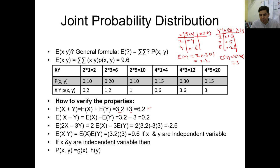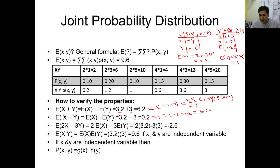When you add E(X) + E(Y) = 3.2 + 3 = 6.2, this equals E(X+Y) which is the double summation of (x+y)·P(x,y). Similarly, E(X) - E(Y) = 3.2 - 3 = 0.2, which equals E(X-Y) = summation of (x-y)·P(x,y). For E(2X-3Y): 2·E(X) - 3·E(Y) = 2(3.2) - 3(3) = 6.4 - 9 = -2.6, confirming our earlier result.